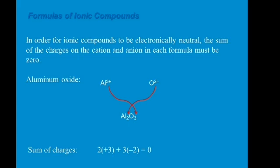Using the crisscross method, the 3 from aluminum 3+ will be transferred to oxygen, and the 2 from oxygen 2− will be shared to aluminum. To check if the compound is electronically neutral: 2 times +3 gives +6, and 3 times −2 gives −6. So +6 plus −6 equals zero — the compound is neutral.